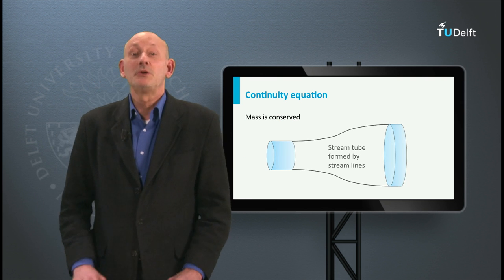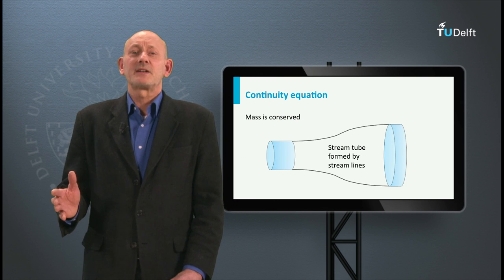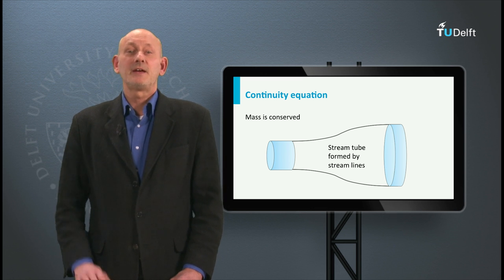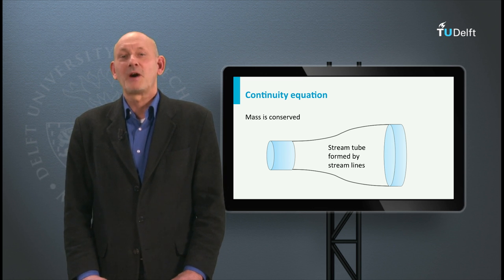First let us have a look at the continuity equation. It is basically about the conservation of mass of a fluid flowing through a stream tube. Here we have such a stream tube formed by streamlines.